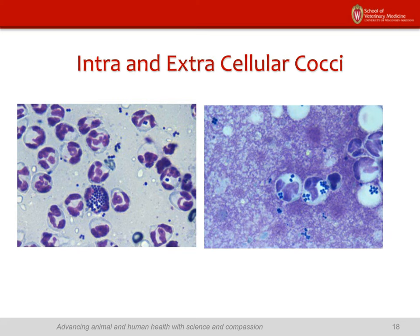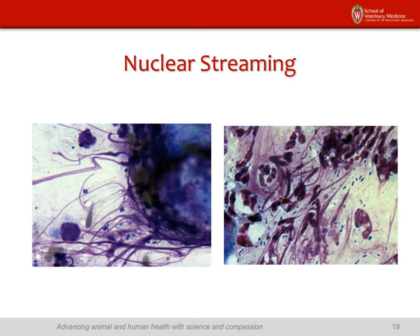Another important finding is whether bacteria are present intracellularly or extracellularly — either way, they're important when seen in the presence of neutrophils, and indicate a situation that probably needs culture if the animal has any history of ear disease. You can also see nuclear streaming — lines and waves on the slide caused when material is smashed onto the slide and cells are damaged. You may not see intact white blood cells, but if you see that streaming, it indicates infection and inflammation are present.